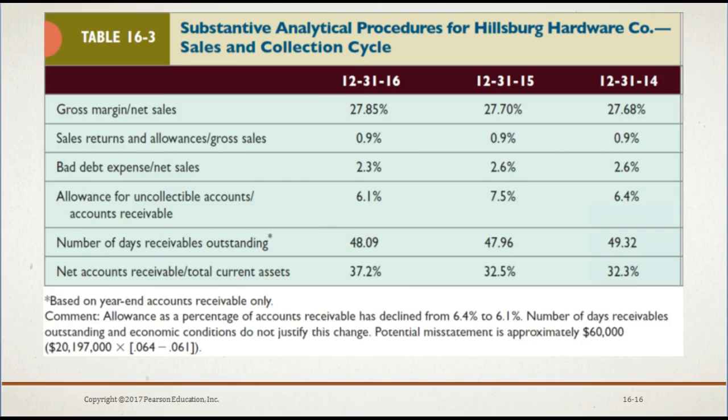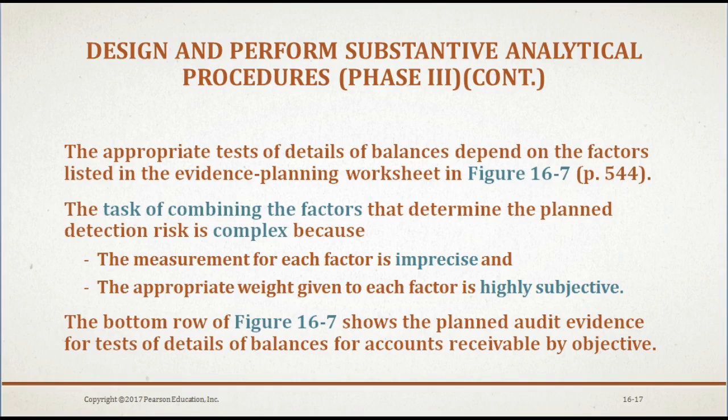The appropriate test of details of balances depends on the factors listed in the Evidence Planning Worksheet as seen in Figure 16-7 on page 544 of your textbook. The task of combining the factors that determine the planned detection risk is complex because the measurement for each factor is imprecise and the appropriate weight given to each factor is highly subjective. The bottom row of Figure 16-7 shows the planned audit evidence for tests of details of balances for accounts receivable by objective.